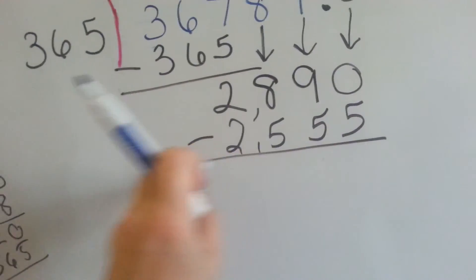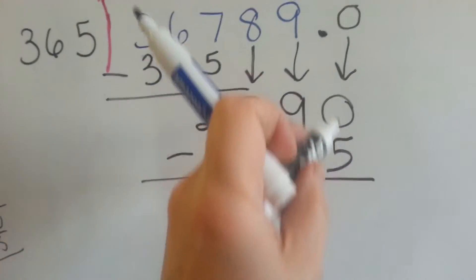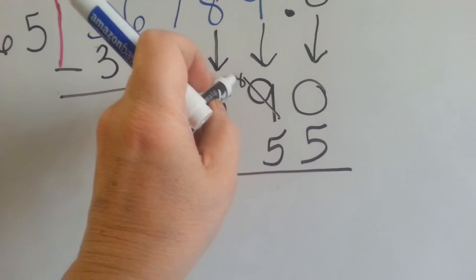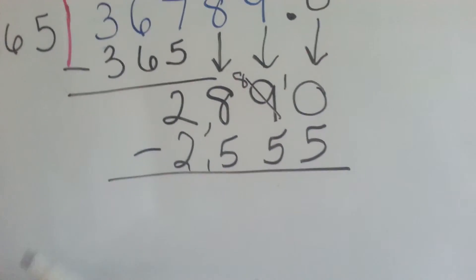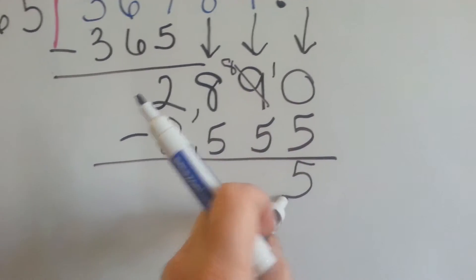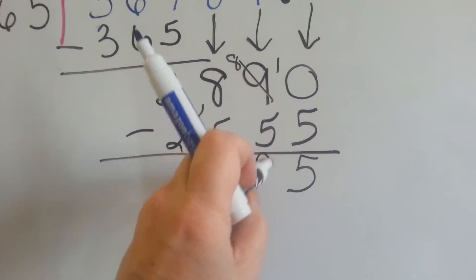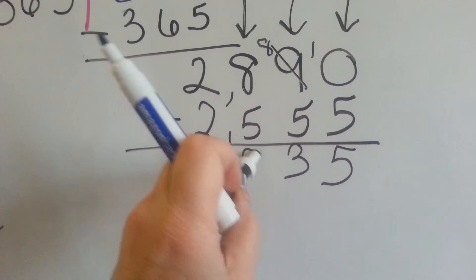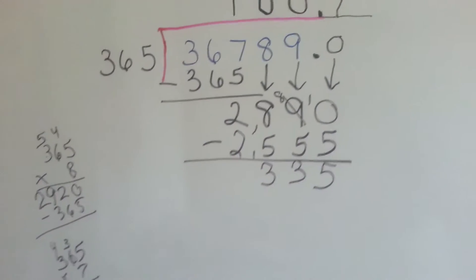We do our subtraction. 0 take away 5, we can't do it, so we have to borrow from the 9. It becomes an 8, and that becomes a 10. That's 5. 8 take away 5 is 3. 8 take away 5 is 3. And now we have 335 left over.